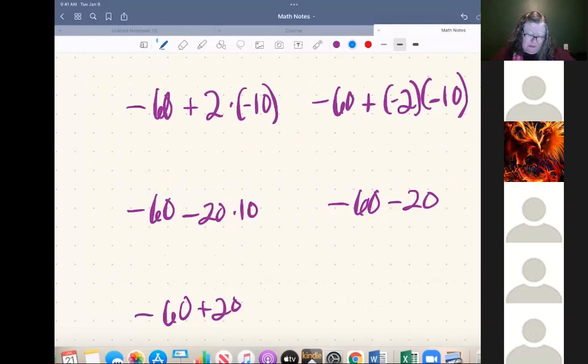So because of order of operations for this first problem, I would have to do this part of the problem first. It's the multiplication part. Negative two or positive two times negative 10 is going to give me negative 20. There is an invisible plus here, right? I'm really saying it's negative 60 and negative 20. That makes that negative 80.